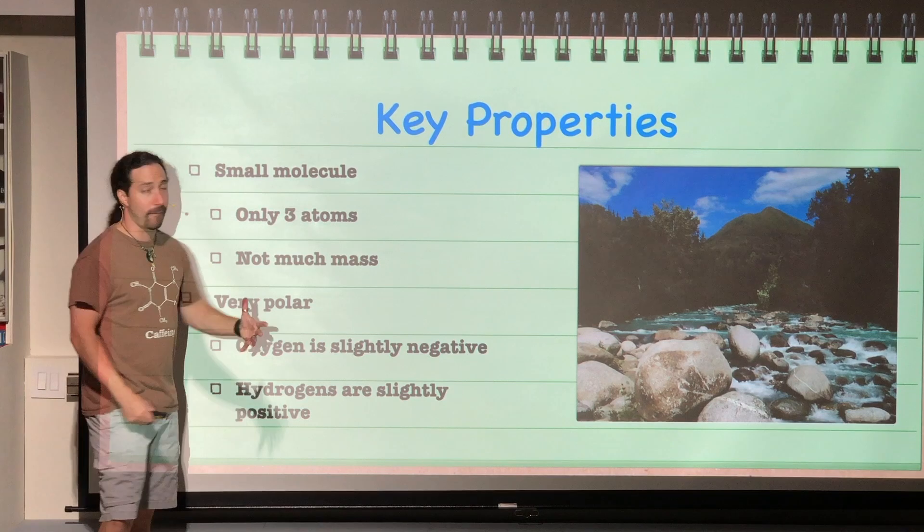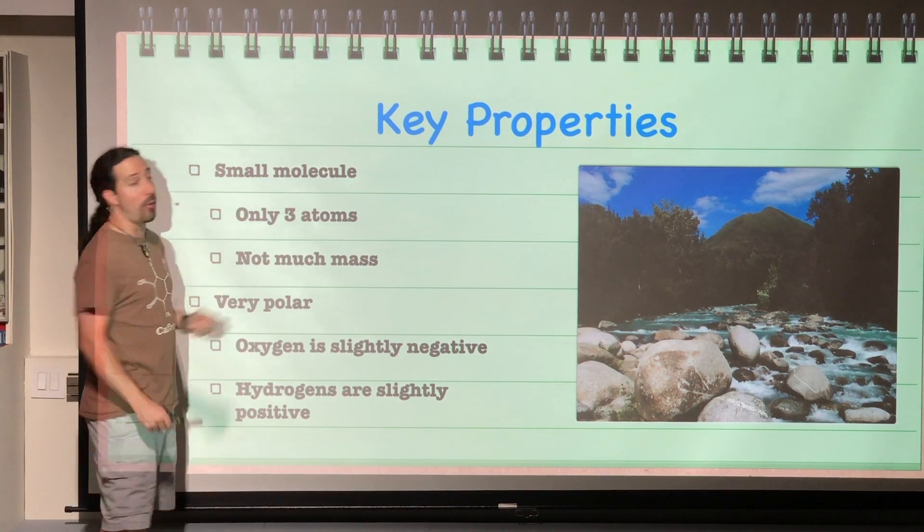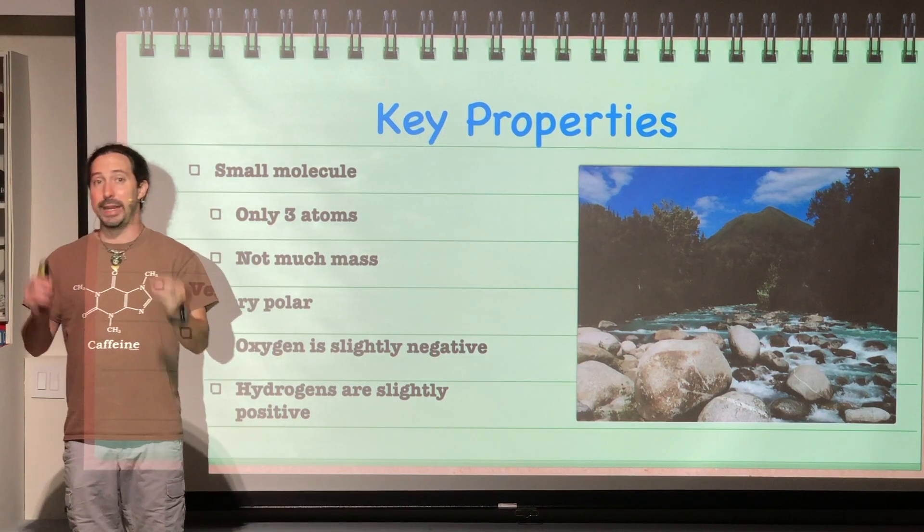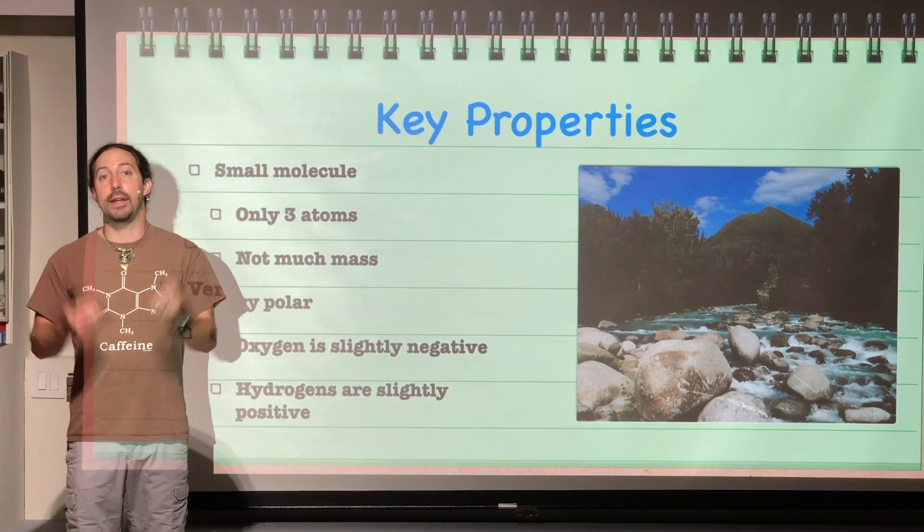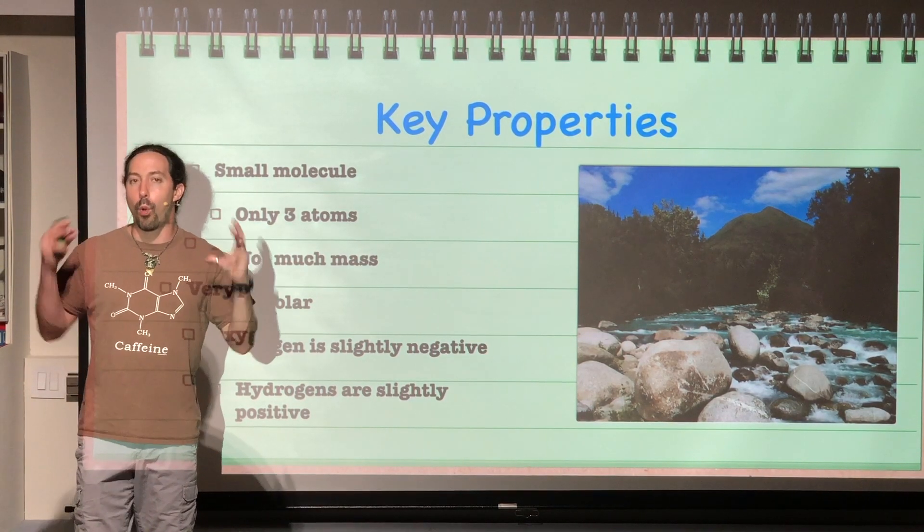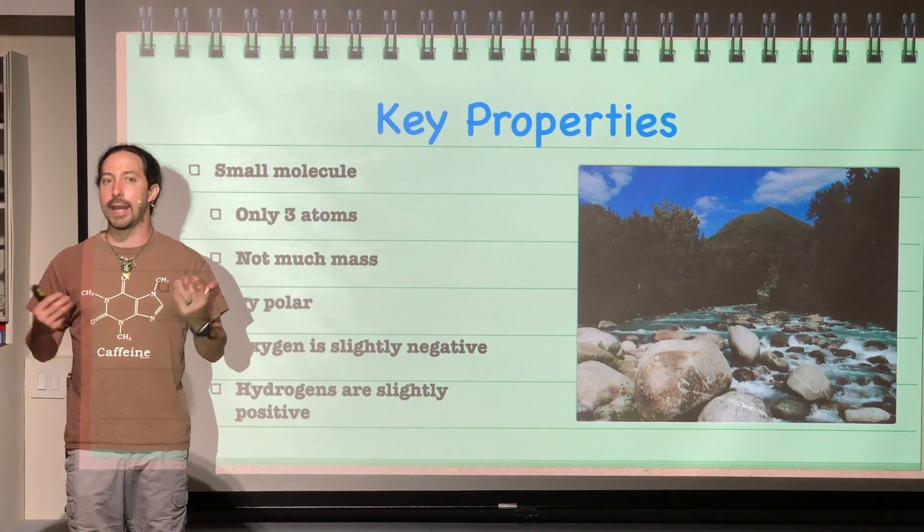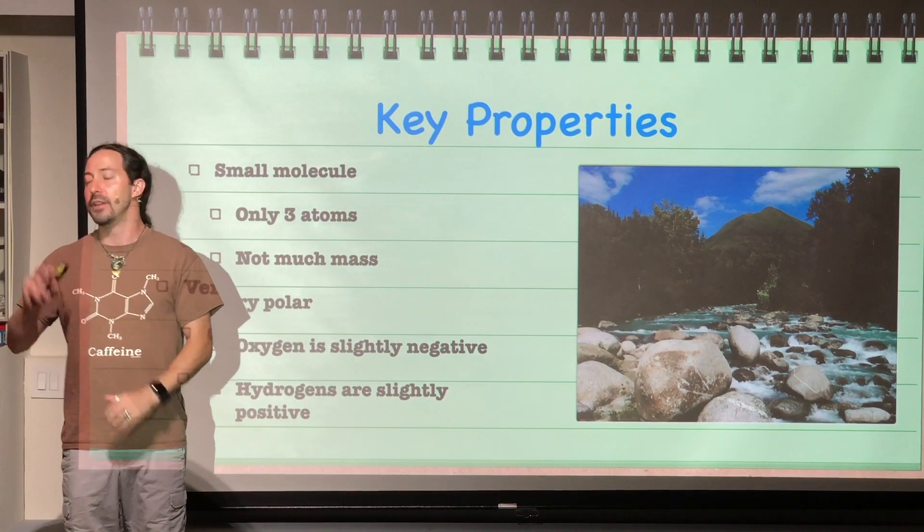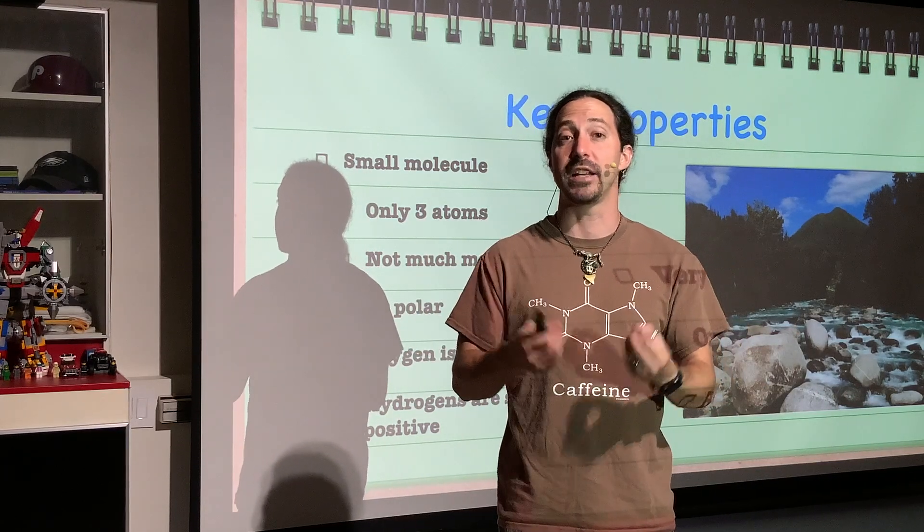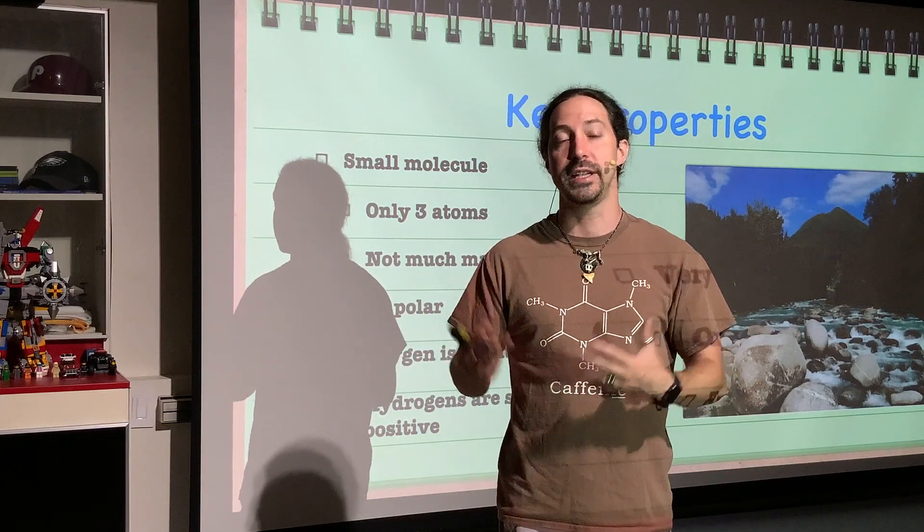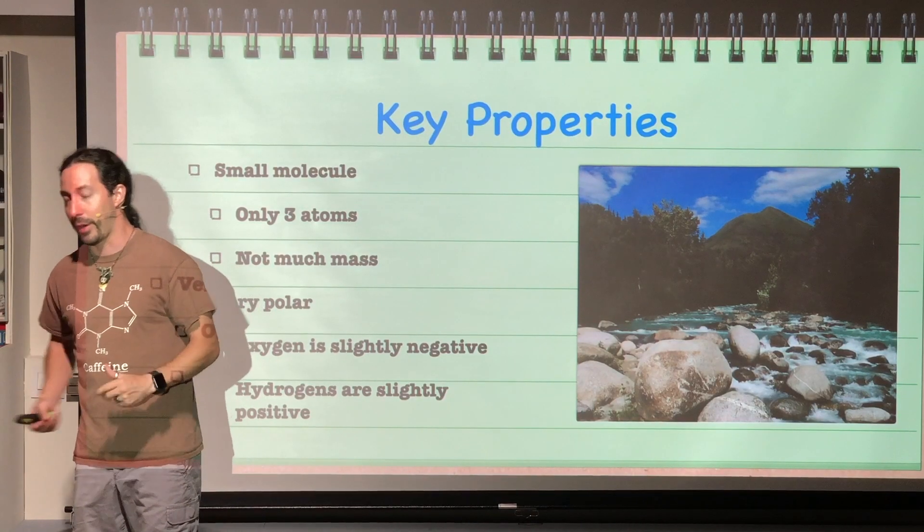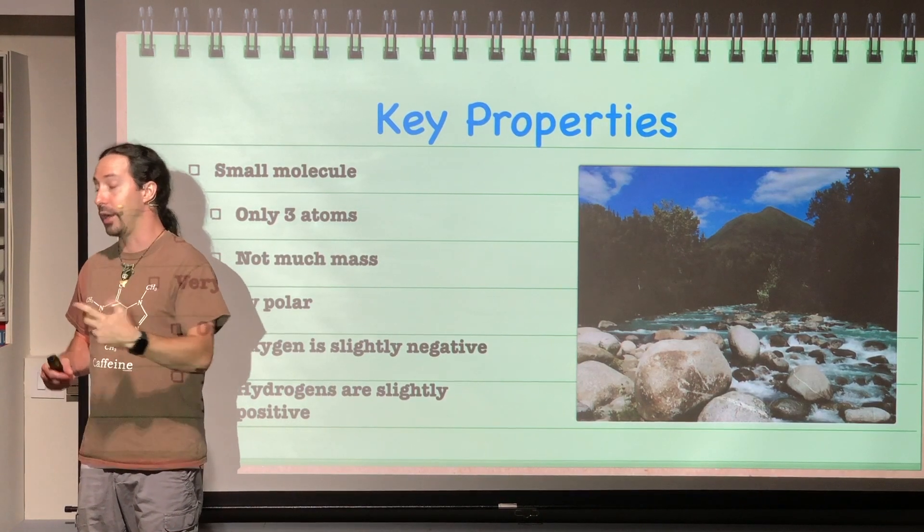So some key properties. First off, we have to remember, water, it's a really small molecule. It's only those three atoms, those two hydrogens and that one oxygen. And that means that it's very, very light. In other words, it doesn't have much mass. Water doesn't have a lot of mass. It only has a mass of 18 Daltons. Daltons are the unit that we use to measure the mass of an atom. Carbon has a mass of 12, nitrogen has a mass of 14, oxygen has a mass of 16, approximately. These are all rounded to the nearest whole number, just so you are aware. And hydrogen has a mass of one Dalton. For water, you just take the 16 Daltons for the oxygen and the two one Daltons for each hydrogen, and you end up with a mass of 18 Daltons.